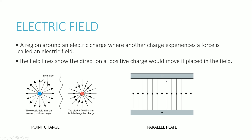The electric field lines between two parallel plates depend on which plate is positive and which is negative. If the top plate is positive, and we draw field lines in the direction a positive charge would move, you'd expect it to go down towards the negative plate — because opposite charges attract. So field lines go straight from the positive plate to the negative plate; they are fairly uniform and straight. If the bottom plate were positive and the top negative, the direction of the arrows would be completely reversed.